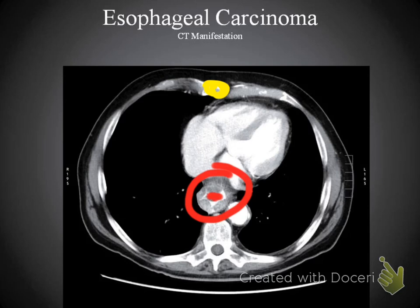If we had the capability to measure, we would see that this wall is probably around four millimeters or greater, and because of this it is very indicative of esophageal carcinoma.